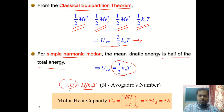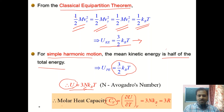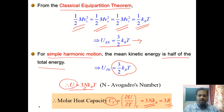The molar heat capacity C_v is defined for one mole of the substance — it is not the specific heat but the molar heat capacity. If we differentiate the internal energy with respect to temperature, it becomes 3N_A k_B. Since N_A is Avogadro's number and k_B is Boltzmann's constant, their product gives us the ideal gas constant R. Therefore, the molar heat capacity of a solid is 3R from classical equipartition theorem.